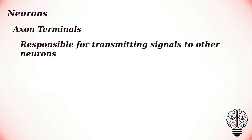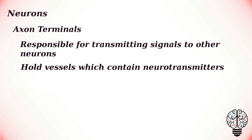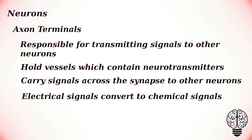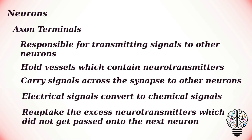The axon terminals, or terminal buttons, located at the end of the neuron, are responsible for transmitting signals to other neurons. At the end of the axon terminal is a gap known as the synapse. Axon terminals hold vessels which contain neurotransmitters. Neurotransmitters are released from the axon terminals into the synapse and are used to carry signals across to other neurons. The electrical signals convert to chemical signals during this process. It is then the responsibility of the axon terminal to reuptake the excess neurotransmitters which did not get passed into the next neuron.